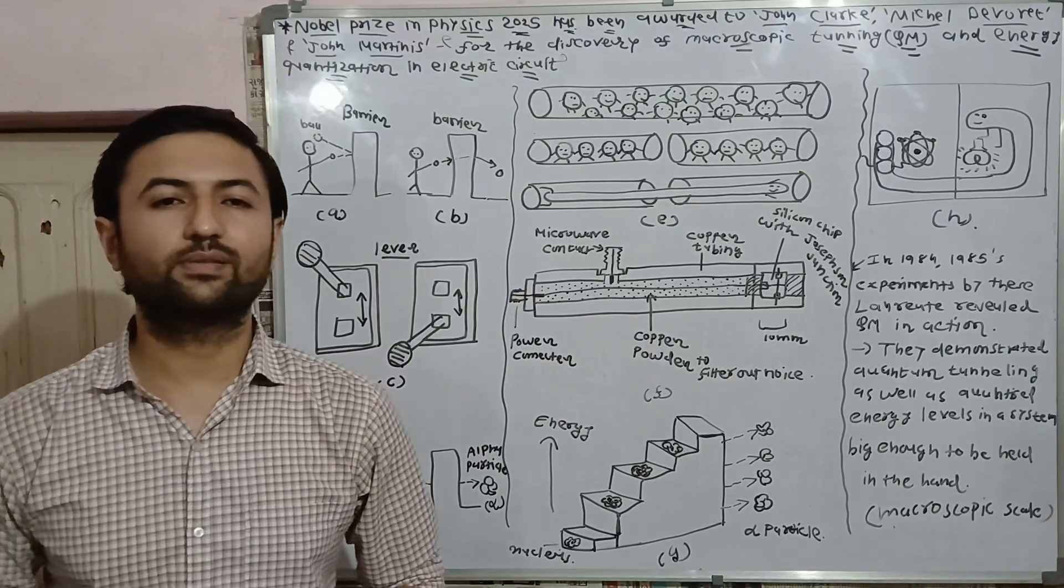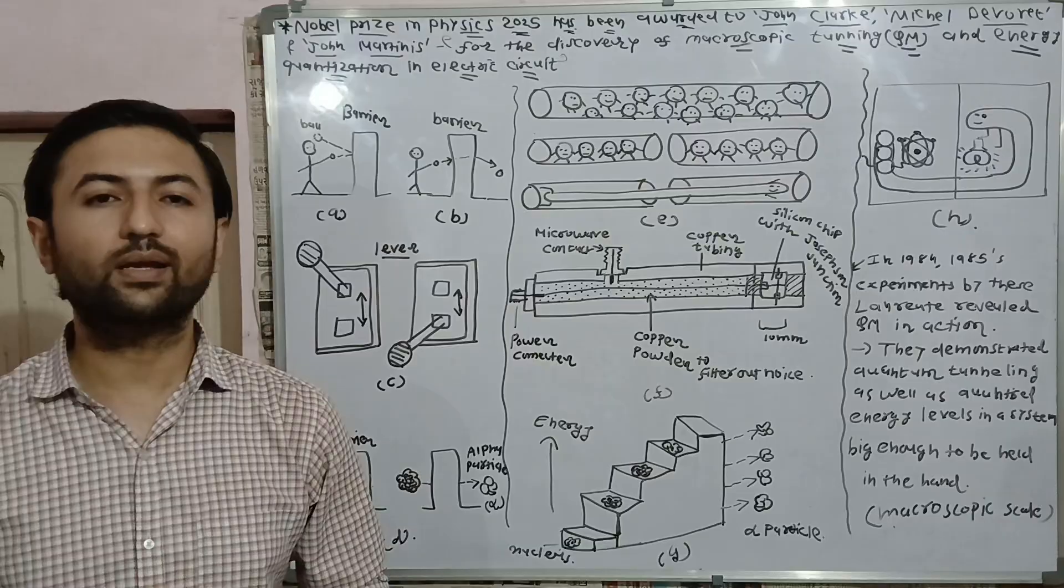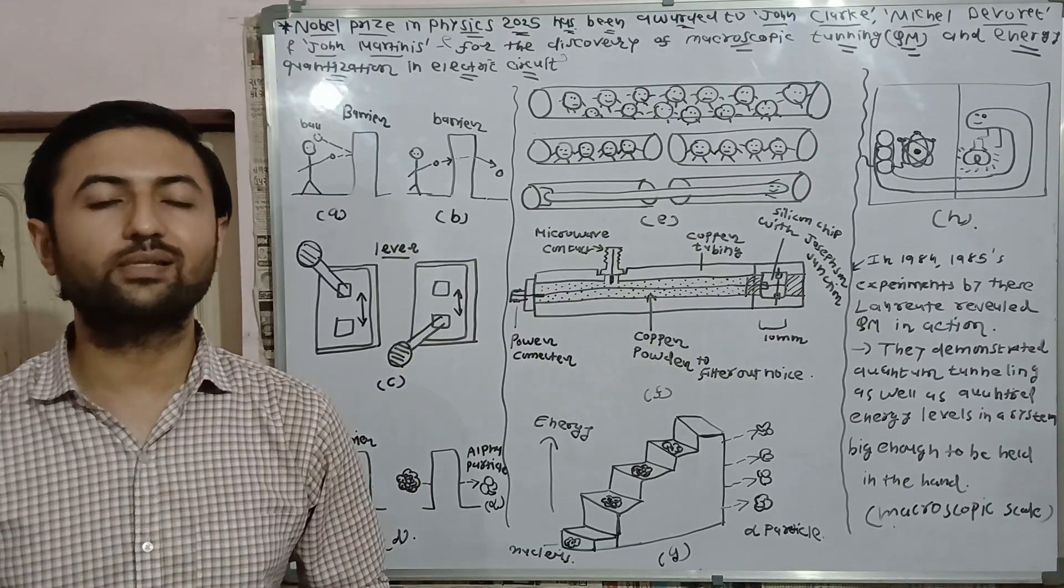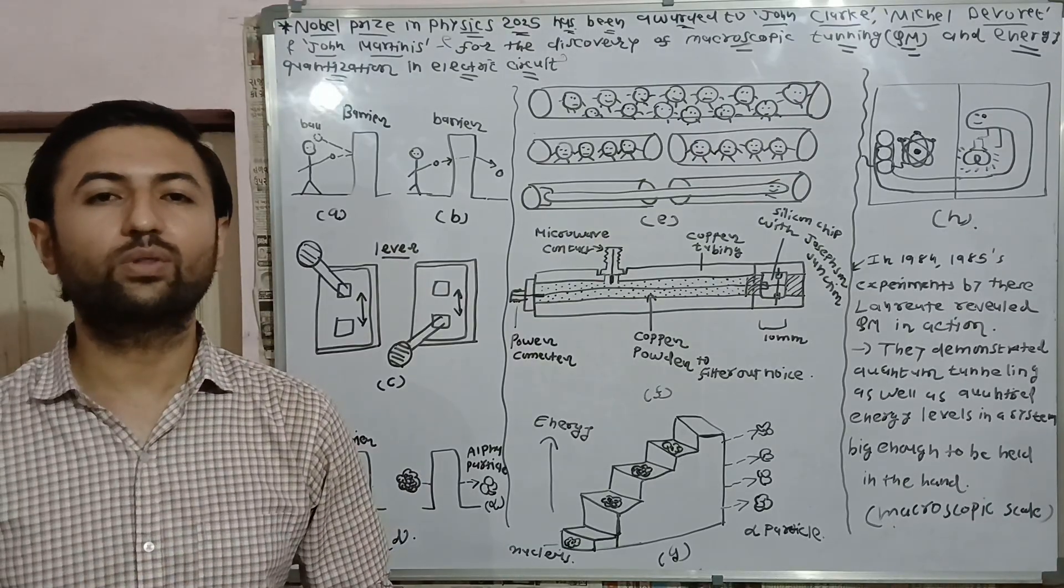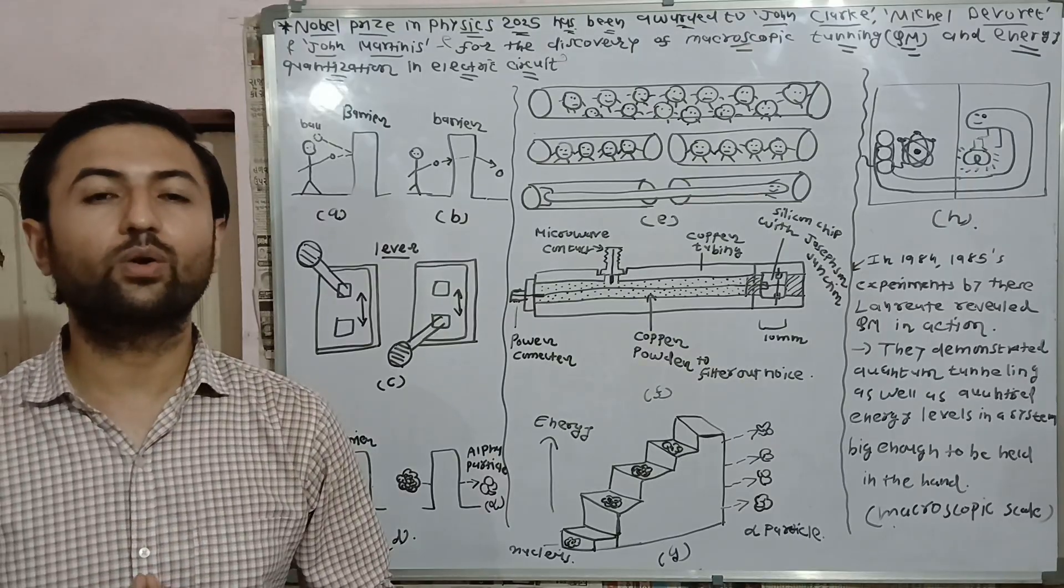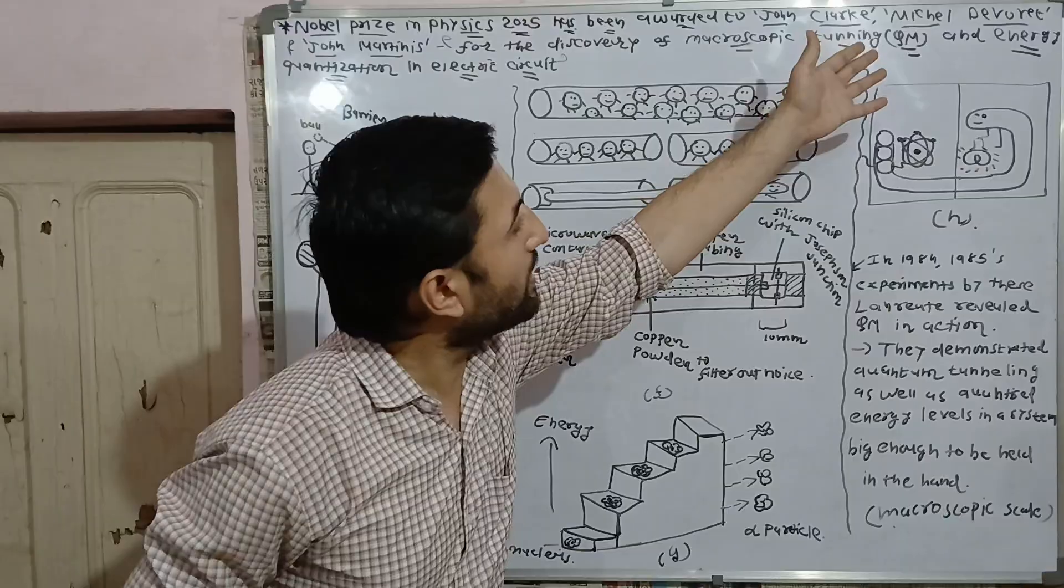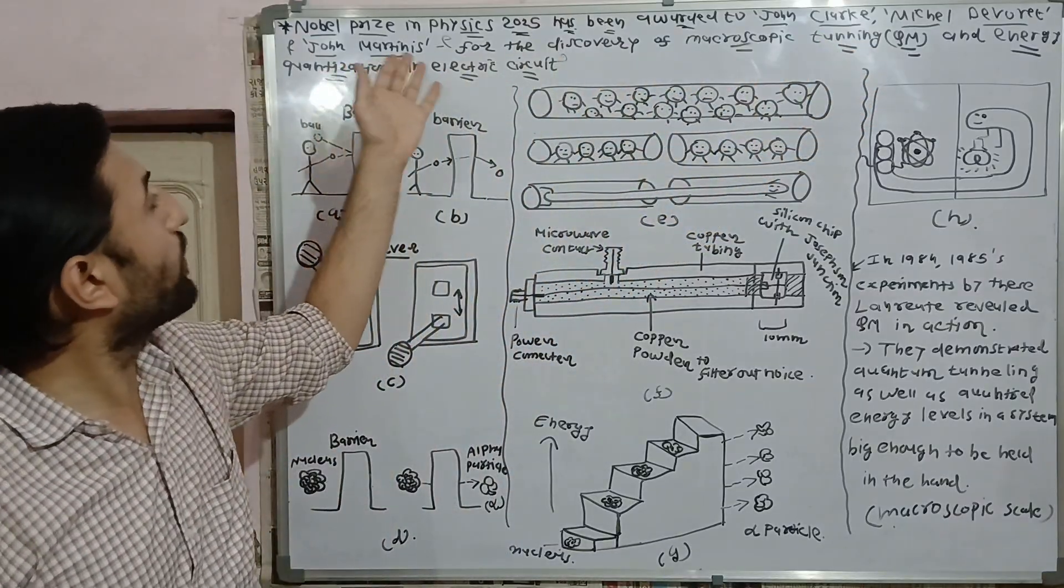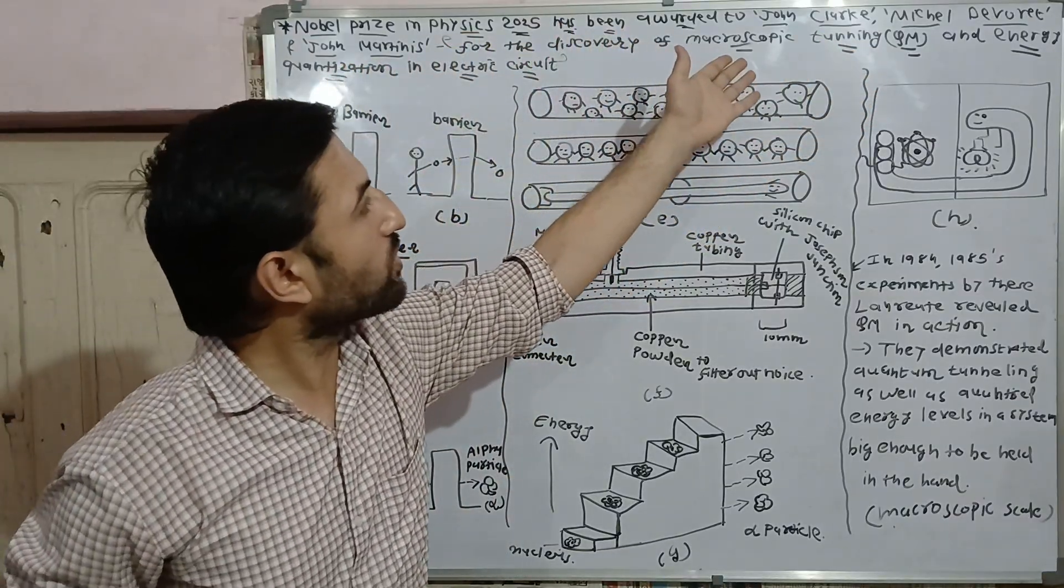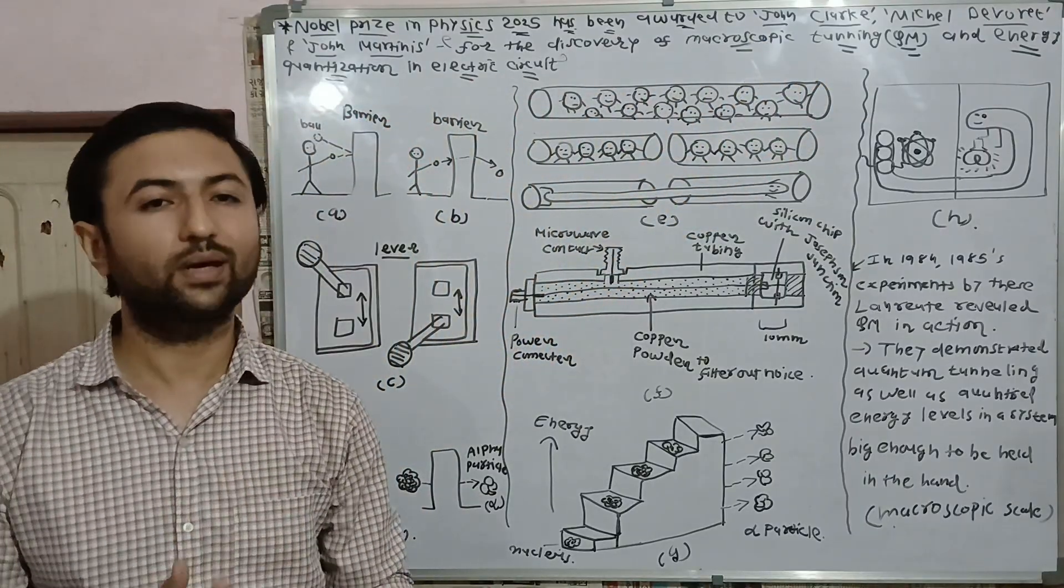Hello friends, welcome to my channel Physics with Raxi. Today the Royal Swedish Academy declared the Nobel Prize in Physics for year 2025. The Nobel Prize in Physics for 2025 has been awarded to John Clark, Michael Devoret, and John Martinis for the discovery of quantum mechanical microscopic tunneling and energy quantization in electrical circuits.